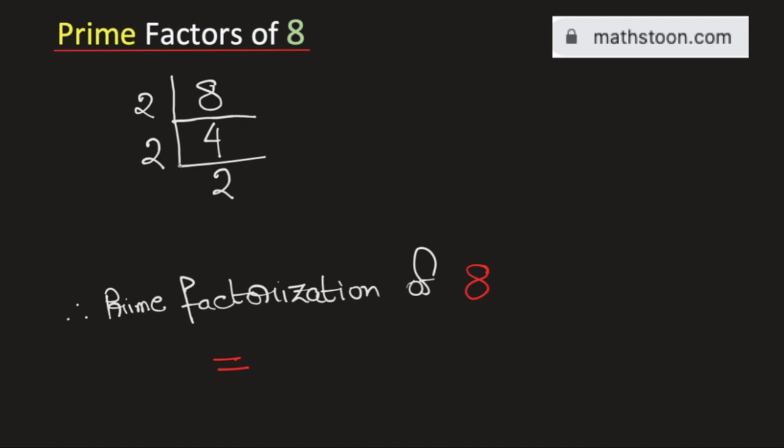And again, 2 is an even number, so we can divide it by 2. And we get 1 here. And the moment we get 1 here, we need to stop.